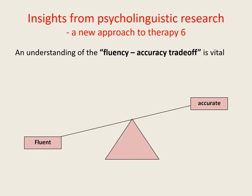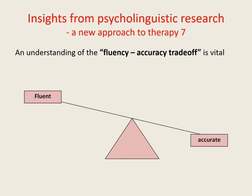A useful concept to bear in mind when deciding on a strategy to reduce the release threshold is that of the fluency-accuracy trade-off. In a nutshell, the more effort we put into articulating our words clearly and accurately, the higher the release threshold rises and the more disfluent we become. In contrast, the more effort we put into simply maintaining the forward flow of speech, the more the release threshold tends to fall and the more error-prone we become.